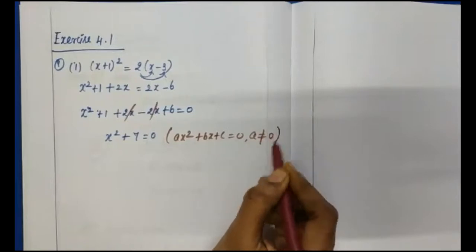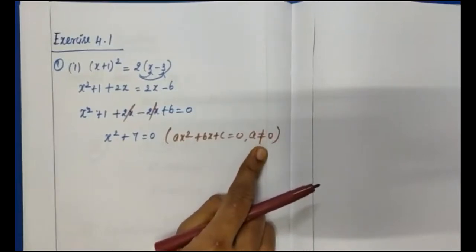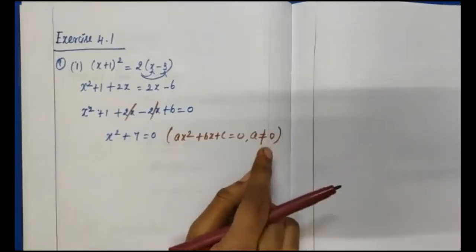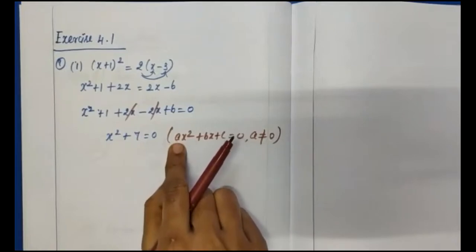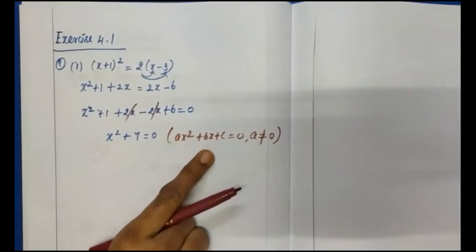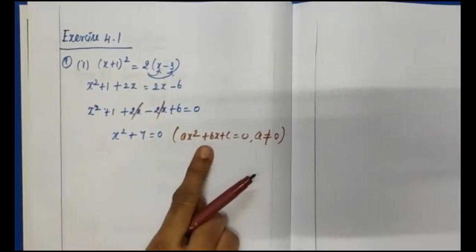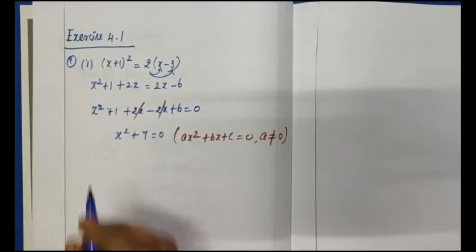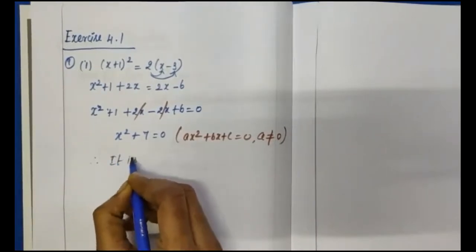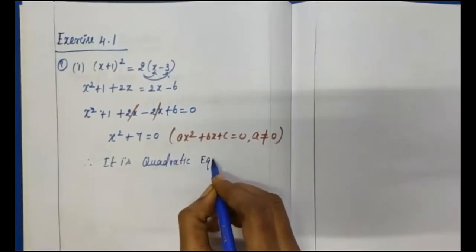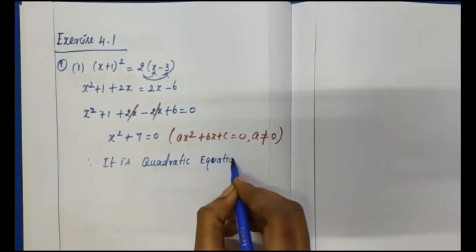This equation is of the form ax squared plus bx plus c equals 0, where a is not equal to 0. This is a very important condition — the x squared coefficient must not be 0. If a equals 0, the degree becomes 1 and it is no longer quadratic. Therefore, Division 1 is a quadratic equation.